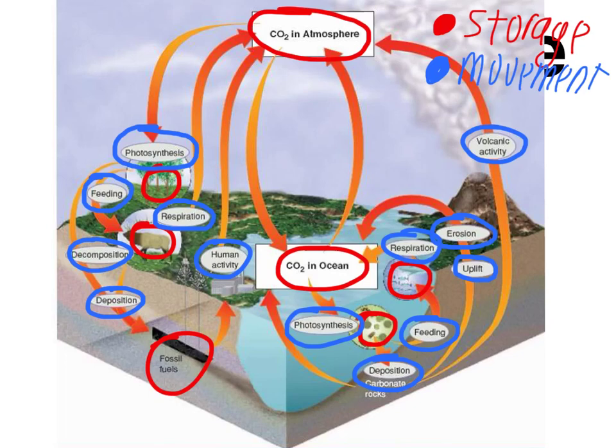So just a little reminder, kind of made you a key up here at the top. The things that are circled in red, those are the different places that carbon is stored. So those are our storage locations. The blue circles are movement. So these are processes that actually move carbon around through the carbon cycle.